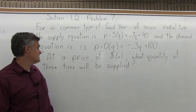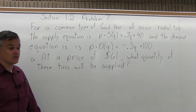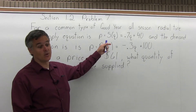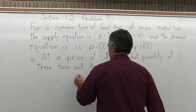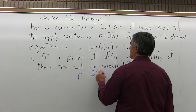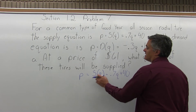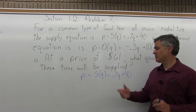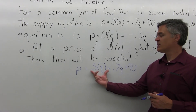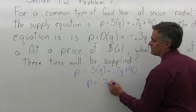The first of these five is: at a price of $61, what quantity of these tires will be supplied? Because the question mentions supply, I will choose the supply equation — the one with the S in it. The supply equation is P equals S(Q) equals 0.7Q plus 40. The S(Q) is in there to identify this as the supply equation. Once I know I'm working with the correct equation, I'll simplify it and write P equals 0.7Q plus 40.